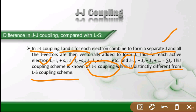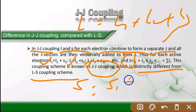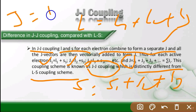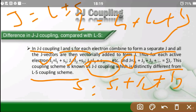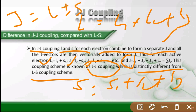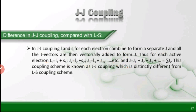In LS coupling, we first combine all the orbital angular momenta together: L = L1 + L2 + L3, and then combine all spins: S = S1 + S2 + S3, and then obtain the total angular momentum J = L ± S. So JJ coupling is different from LS coupling, but the result is the same in both coupling schemes.